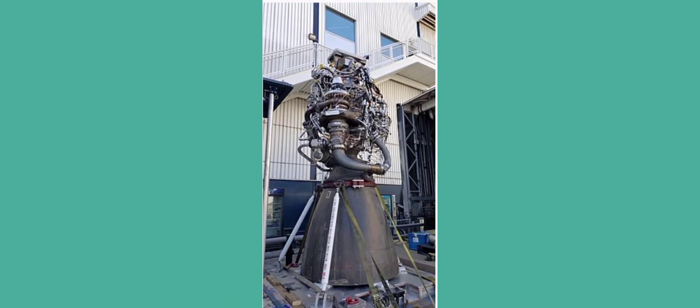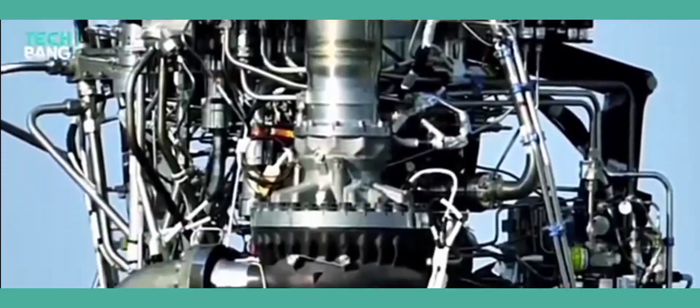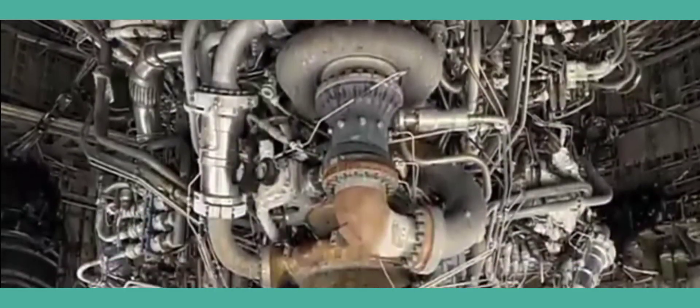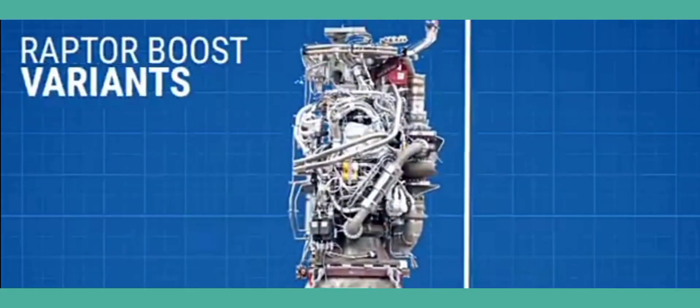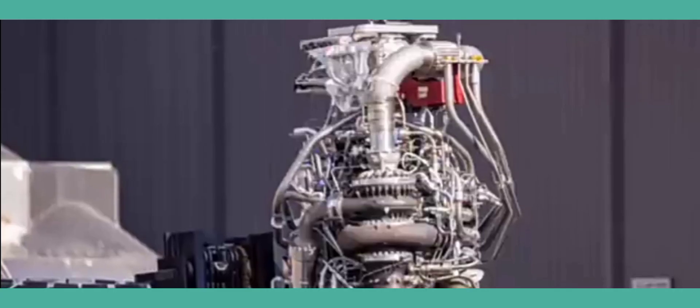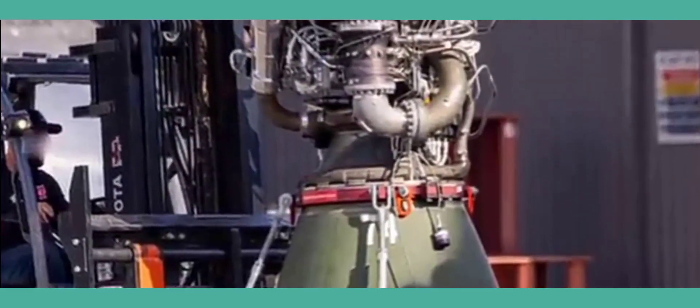Raptor is a family of full-flow staged combustion cycle rocket engines developed and manufactured by SpaceX for use on the in-development SpaceX Starship. The engine is powered by cryogenic liquid methane and liquid oxygen (methalox), rather than the RP-1 and liquid oxygen (keralox) used in SpaceX's prior Merlin and Kestrel rocket engines.